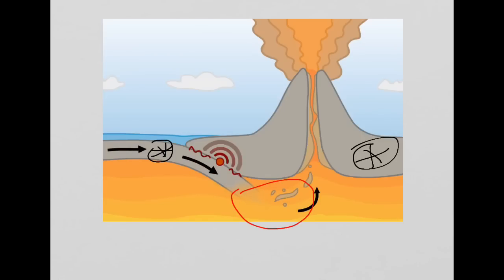In this area here, the subducted or forced under plate melts in the mantle and it causes a build up of magma in this area here. That magma makes its way through the Earth's crust at a number of weaknesses and it can form a volcano.